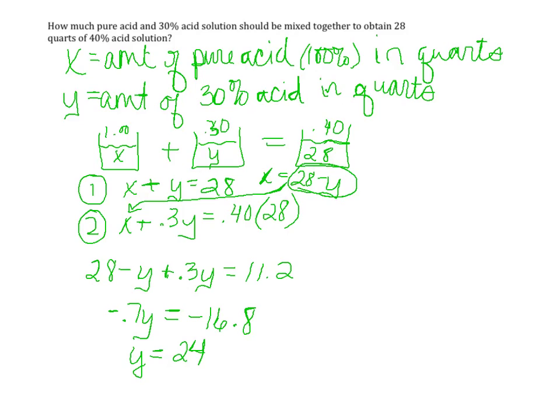And in the context of this problem, y equals 24 quarts of my 30% solution, which means the amount of pure acid that I need, which is x, would be 28 minus 24 or 4 quarts of pure acid.